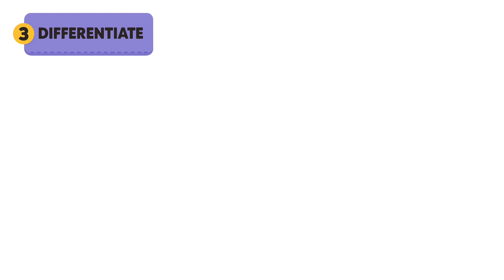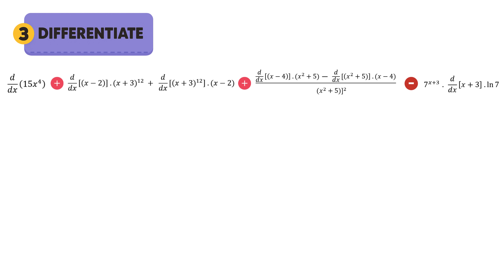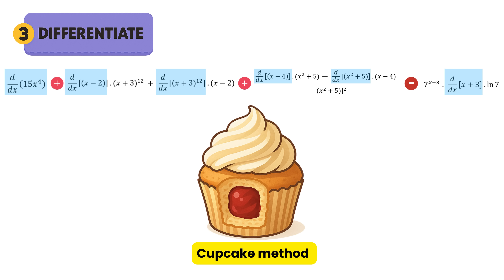Now for our third and final step — this is where we actually differentiate. We first identify exactly what we need to differentiate from the structure we set up in step two. We only differentiate the parts of our structure that have d/dx stuck to them. To differentiate successfully in this step, we use something called the cupcake method, which helps us tell the difference between a simple and a composite function. This is super important because the way we differentiate a simple function is very different from how we differentiate a composite one.